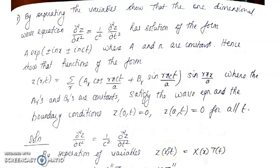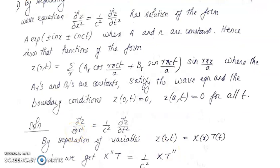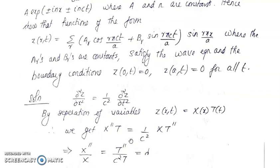By separation of variables, with independent variables x and t, we write z(x,t) = X(x)·T(t). Then ∂²z/∂x² becomes X''T, and (1/c²)(∂²z/∂t²) becomes (1/c²)XT''. Separating the variables gives X''/X = T''/(c²T) = λ.